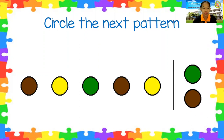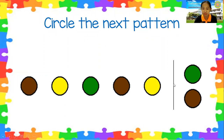Next one. Brown, yellow, green, brown, yellow. What do you think is the next pattern — is it green or brown? It's green. Very good.